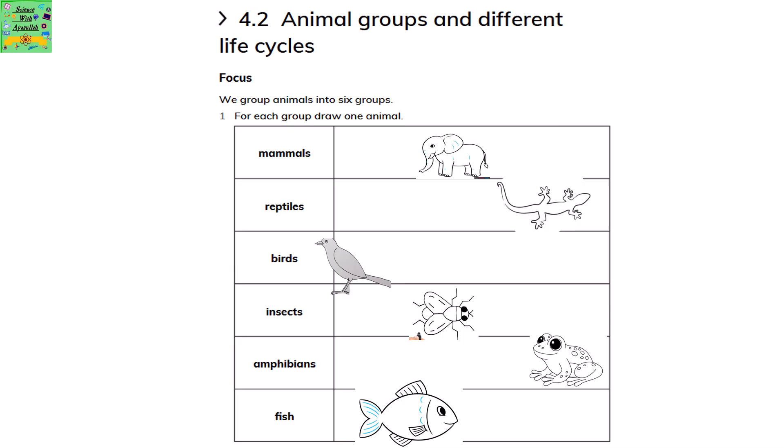Mammals — an example would be an elephant. Reptiles — it could be a lizard. Birds — there are pigeons or sparrows. Insects — a house fly. Amphibian — it's a frog. Fish — a fish that you normally see.